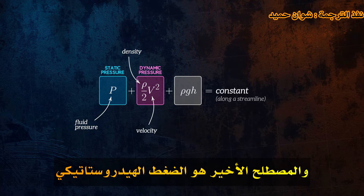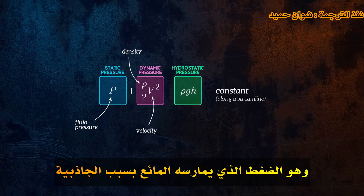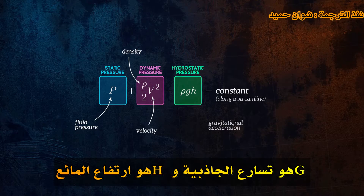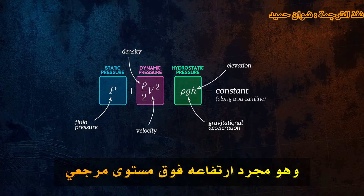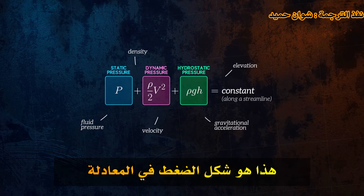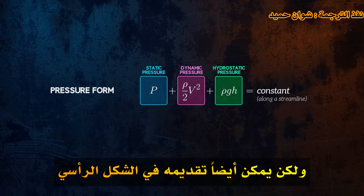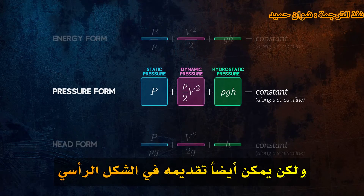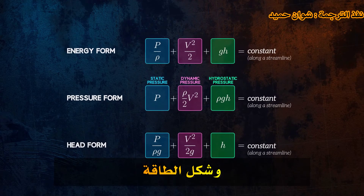And the last term is the hydrostatic pressure, which is the pressure exerted by the fluid due to gravity. G is gravitational acceleration, and H is the elevation of the fluid, which is just its height above a reference level. This is the pressure form of the equation, but it can also be presented in the head form and the energy form.